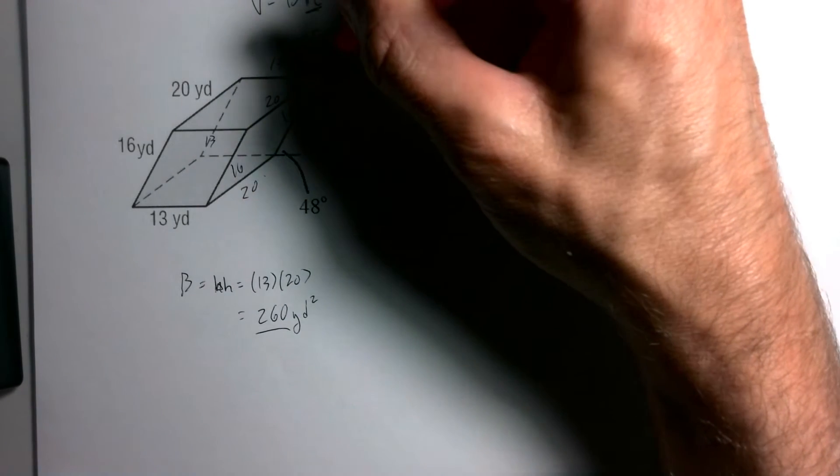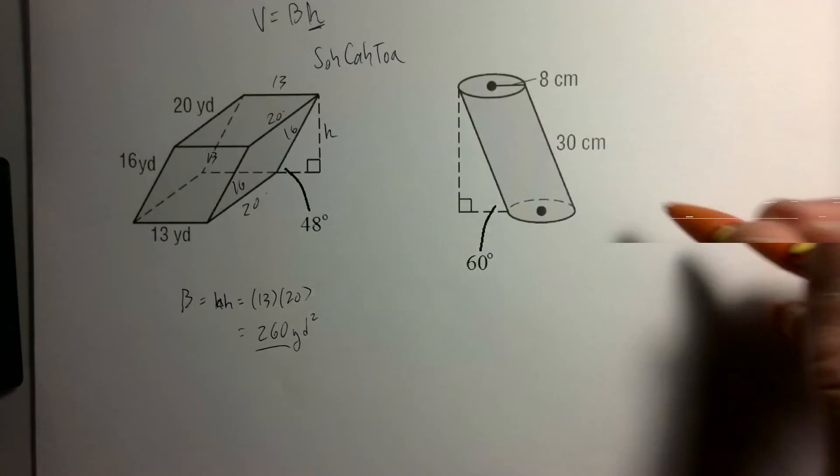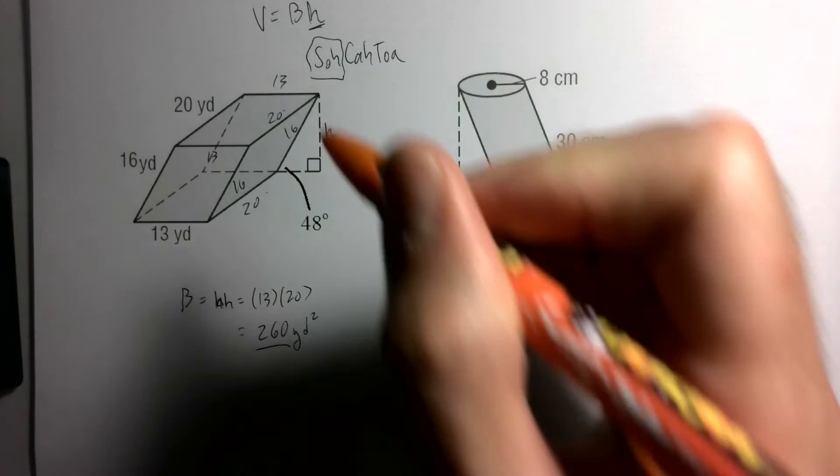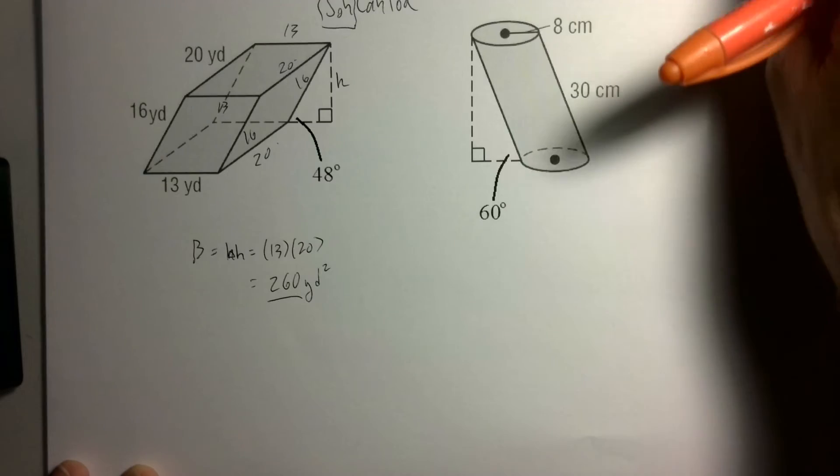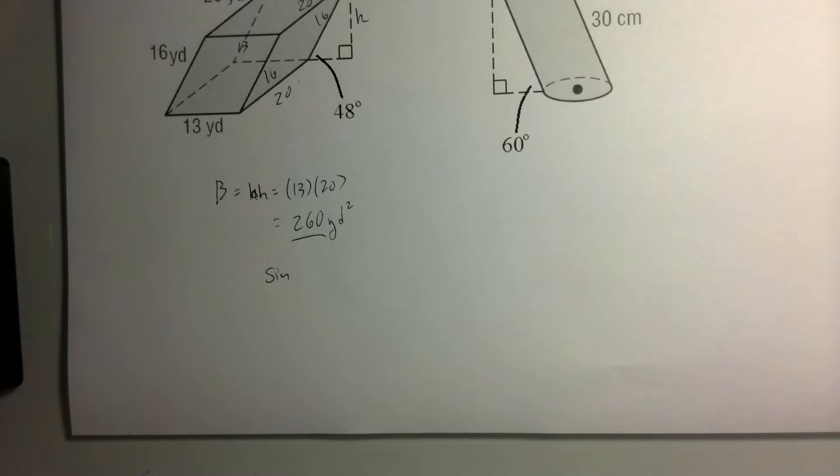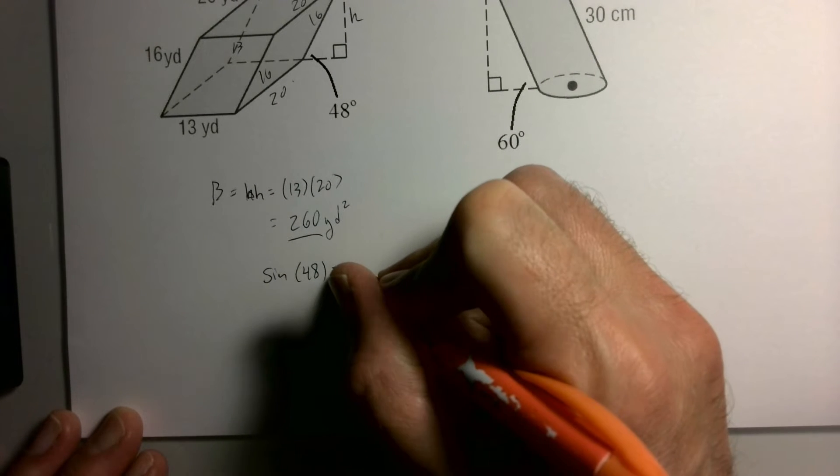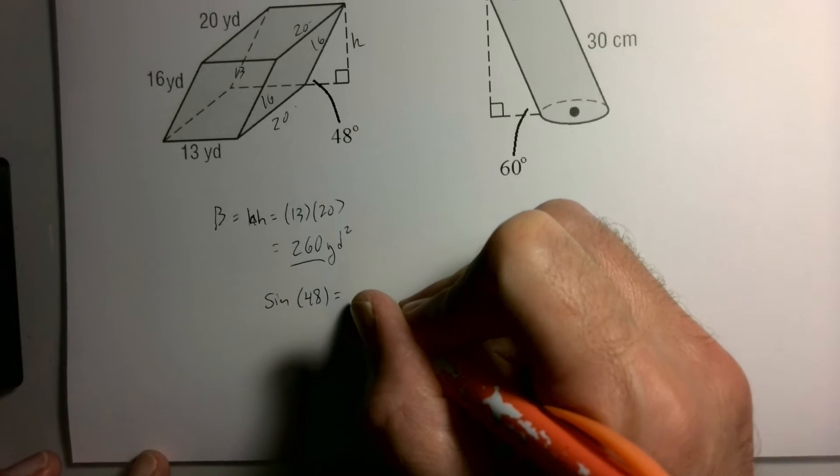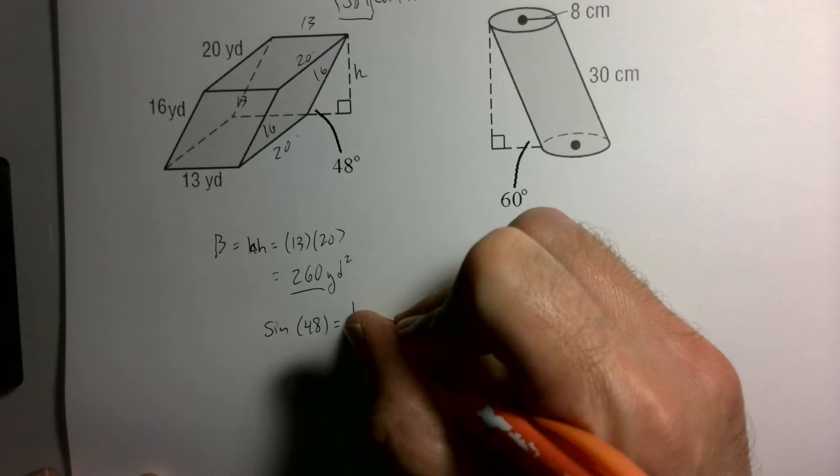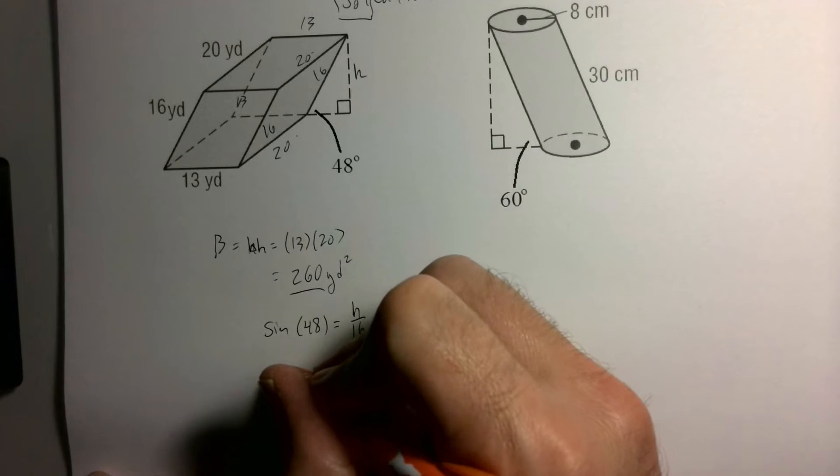Sine is the opposite to hypotenuse. So to find that height, I should say sine of 48, or from the point of view of that 48-degree angle, is the same as comparing my height to my hypotenuse of 16. We need to solve for H. 16 sine 48. I'm going to leave that as is and then type that in all together in my calculator.